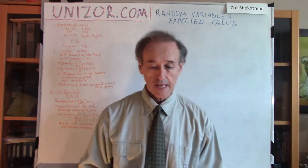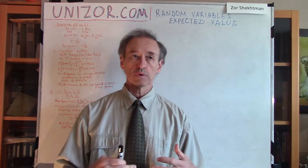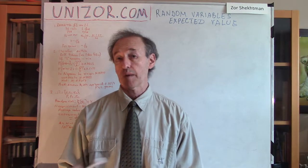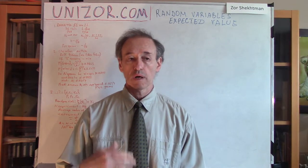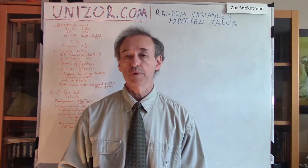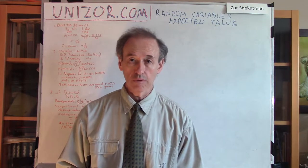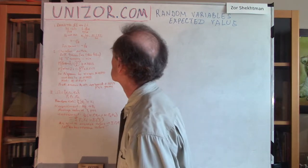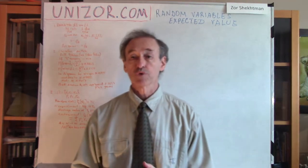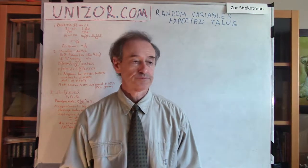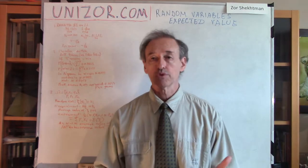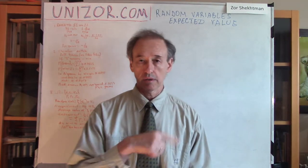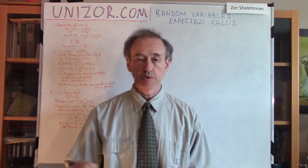Before presenting this in a purely theoretical form, I would like to have a couple of examples where it would be quite obvious what expected value is. Example number one: the game of roulette. The game of roulette is when you have a wheel with different partitions.